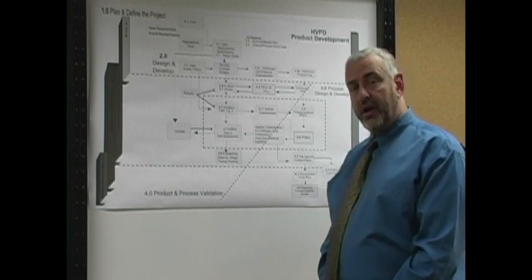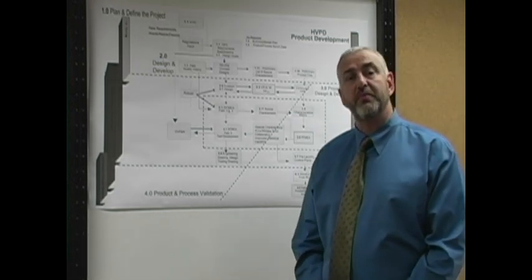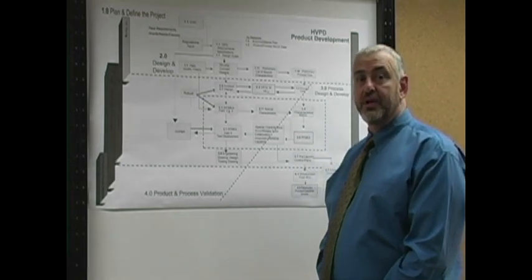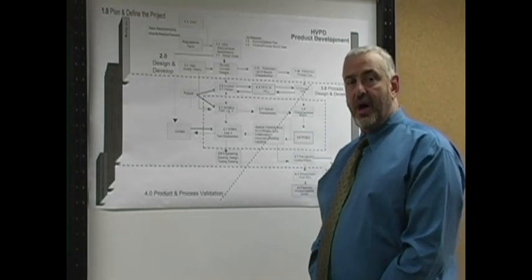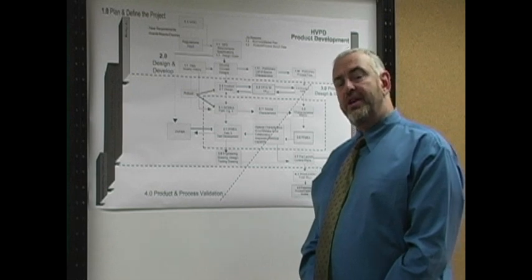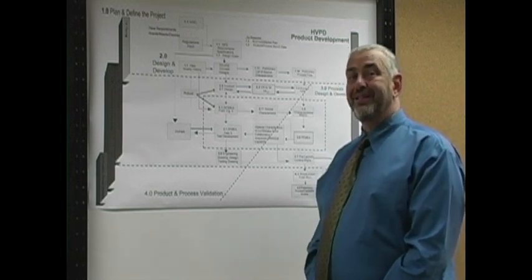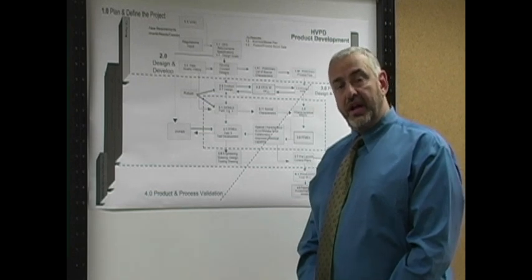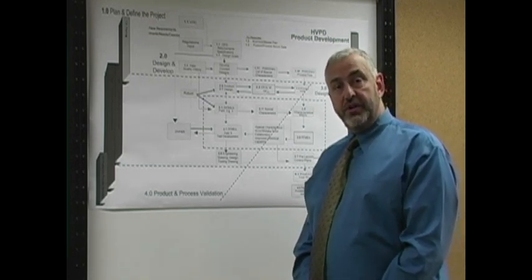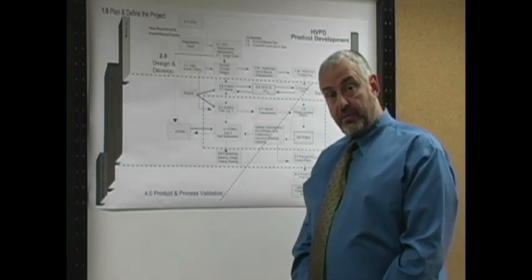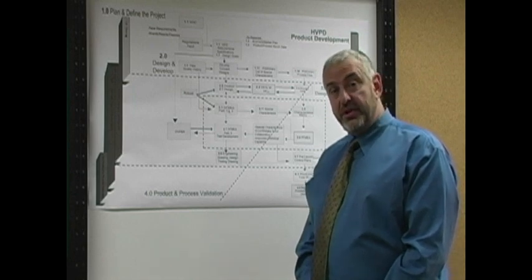Simultaneously, or concurrently with Section 2, Section 3 - which is Process Design and Development - occurs. So while the design of the product is moving forward, the manufacturing engineers assigned to the project are also developing the processes and getting an idea of what the tooling needs to look like to deliver the product that the design engineers envision.